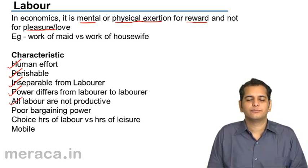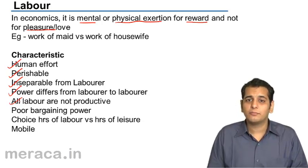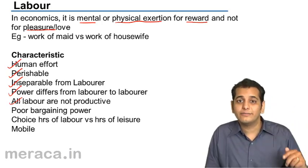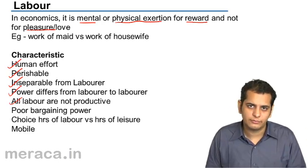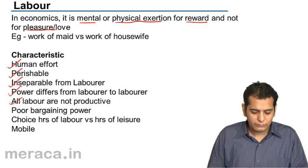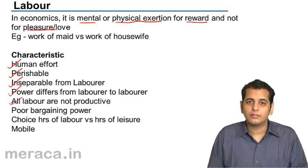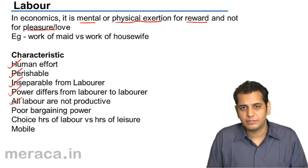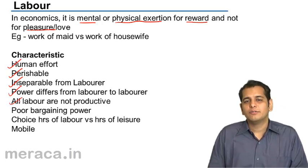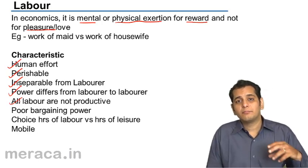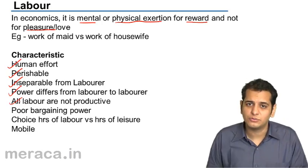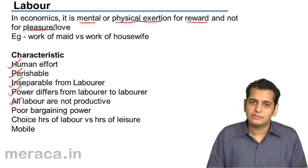All laborers are not equally productive. Some are highly productive, others are less so, and some may have zero productivity. For instance, if a laborer employed in a garment factory is asked to produce guns, he will have zero productivity. Even within the same garment factory, some laborers can produce a higher amount in the same time than others. So productivity keeps changing from laborer to laborer.